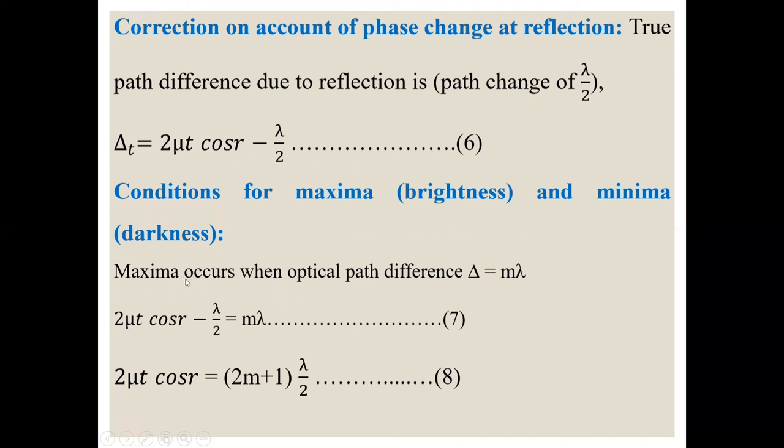When 2 mu t cos r minus lambda by 2 equals m lambda, we get maximum brightness. So 2 mu t cos r is equal to 2m plus 1 lambda by 2. This is condition for brightness.